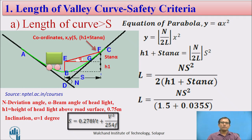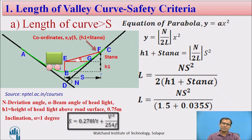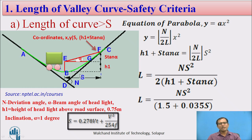Now let us find the length of the valley curve for stopping sight distance criteria. We need to consider two criteria: first, the comfort criteria with respect to the rate of introduction of centrifugal acceleration; second, the stopping sight distance condition. The length of the valley curve is designed so that when the vehicle is at the lowest point of the valley curve, there is a minimum sight distance requirement. Here h1 is the height of the headlight above the road surface, taken as an average height.